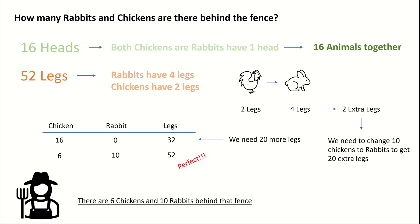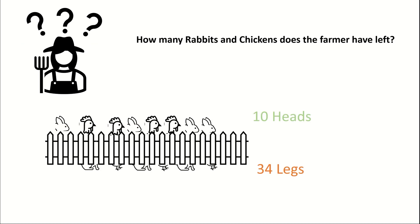So the farmer is happy to know there are in fact 6 chickens and 10 rabbits behind that fence. Do you know how to solve this chicken and rabbit problem? Good — because that evening, another storm hit. And the next morning, the farmer could only count 10 heads and 34 legs. How many rabbits and chickens does the farmer have left? Leave your answer in the comment section.